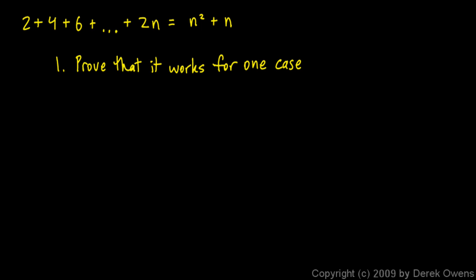And that's usually trivial. We've already shown that it works for three cases. We took n equals 4, for example. 2 plus 4 plus 6 plus 8 was 20, and we saw that 4 squared plus 4 is also 20. So proving that it works for one case is pretty easy.